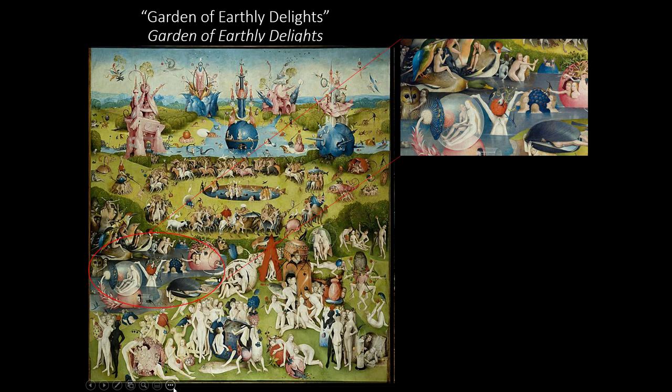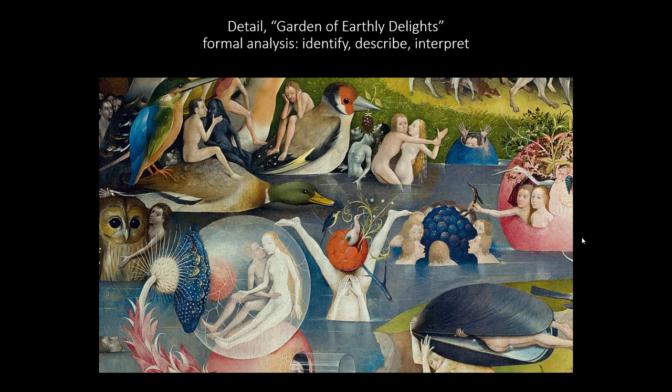I chose to take a look at the central panel — the Garden of Earthly Delights — and you can see this small area here, shown in detail. This is what I'm going to analyze. Here is a close-up. We're going to start out with a short formal analysis where I will identify what appear to be significant features of the composition.